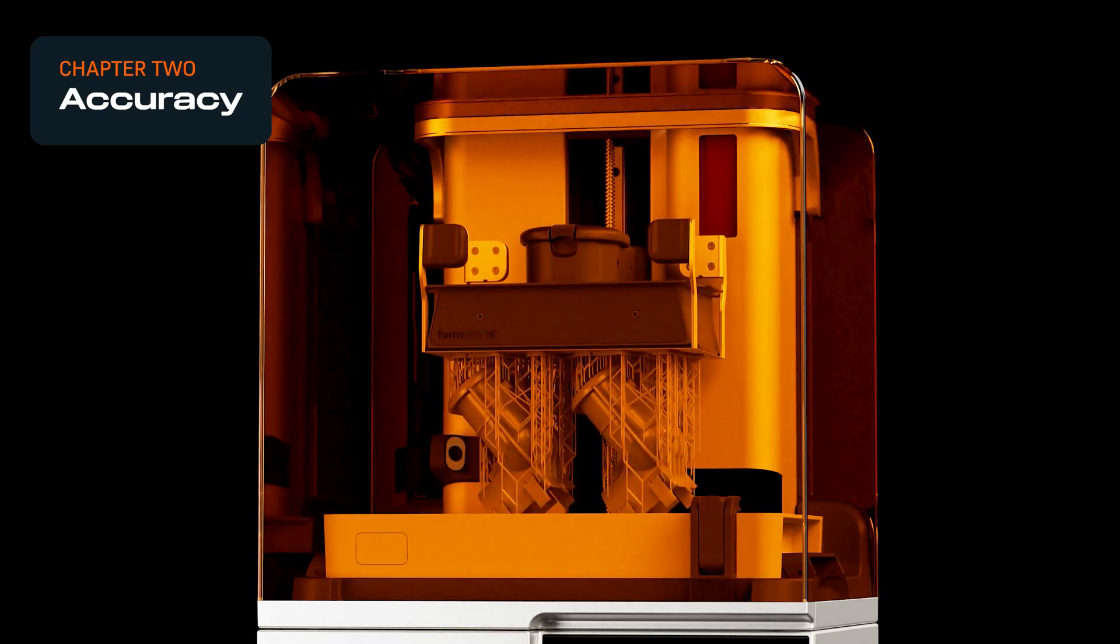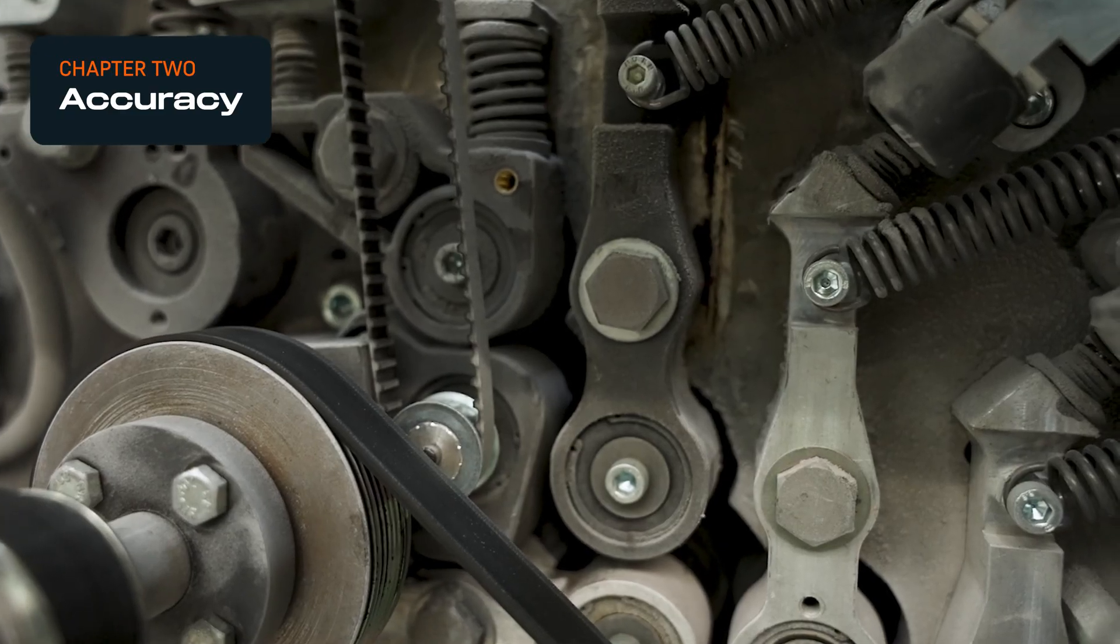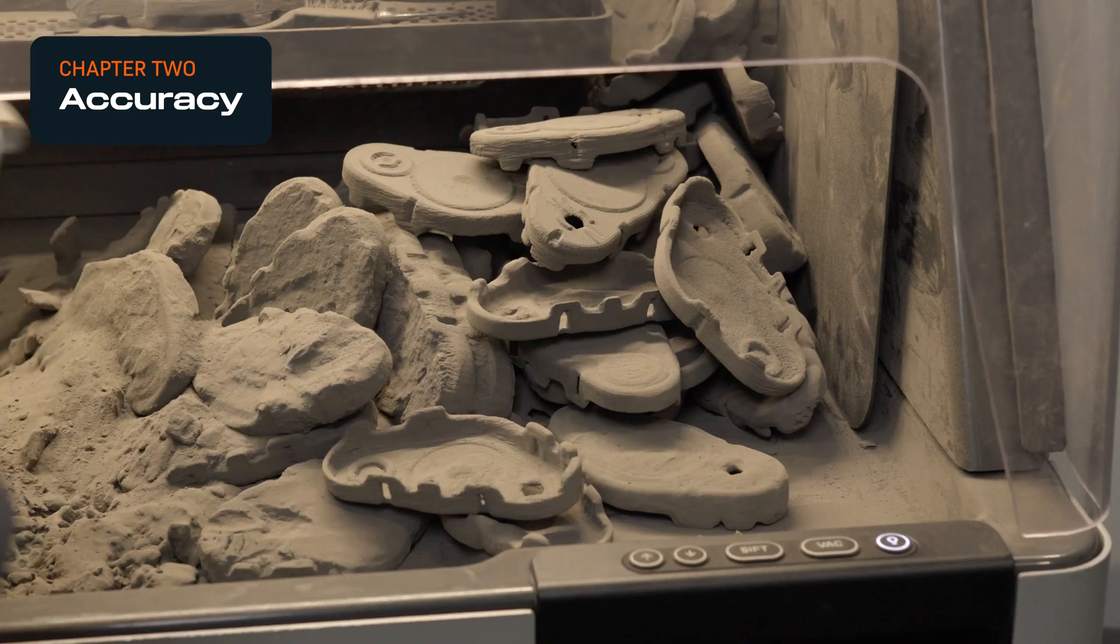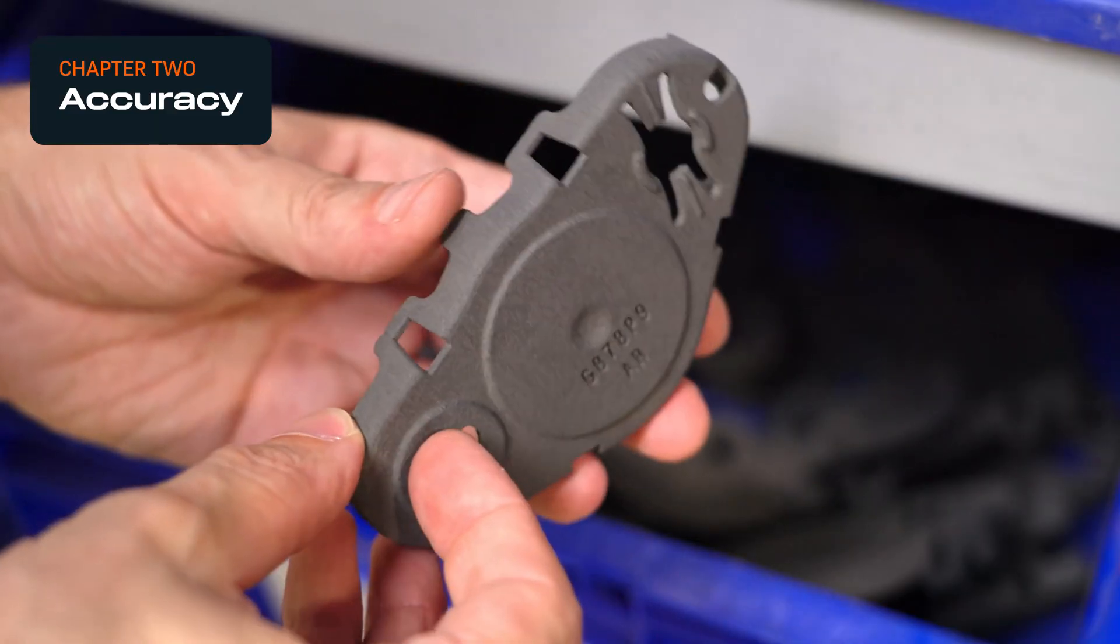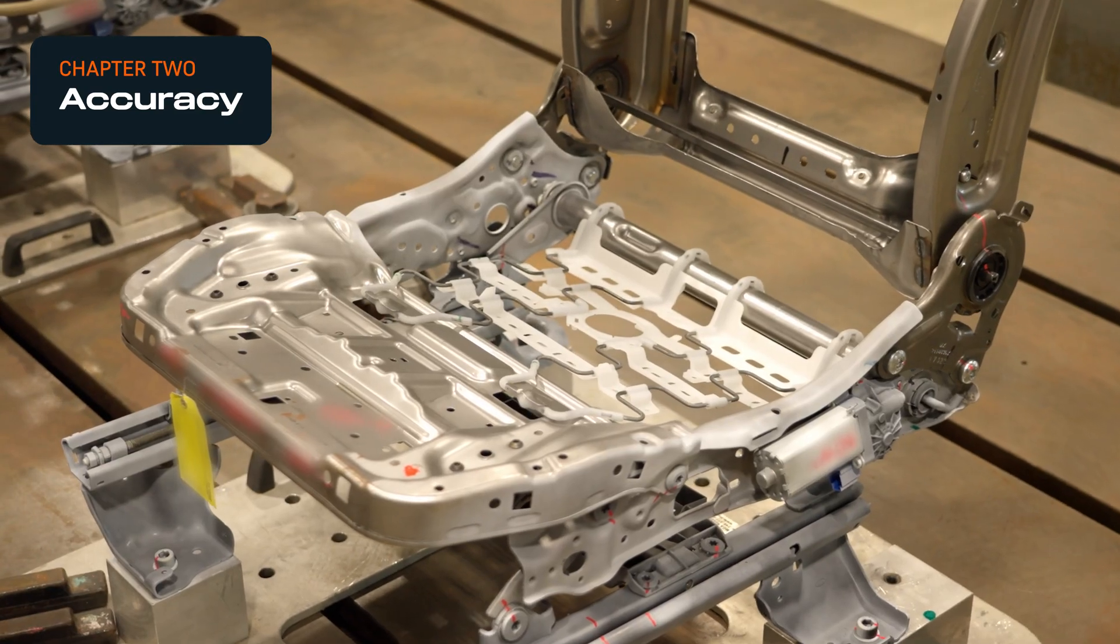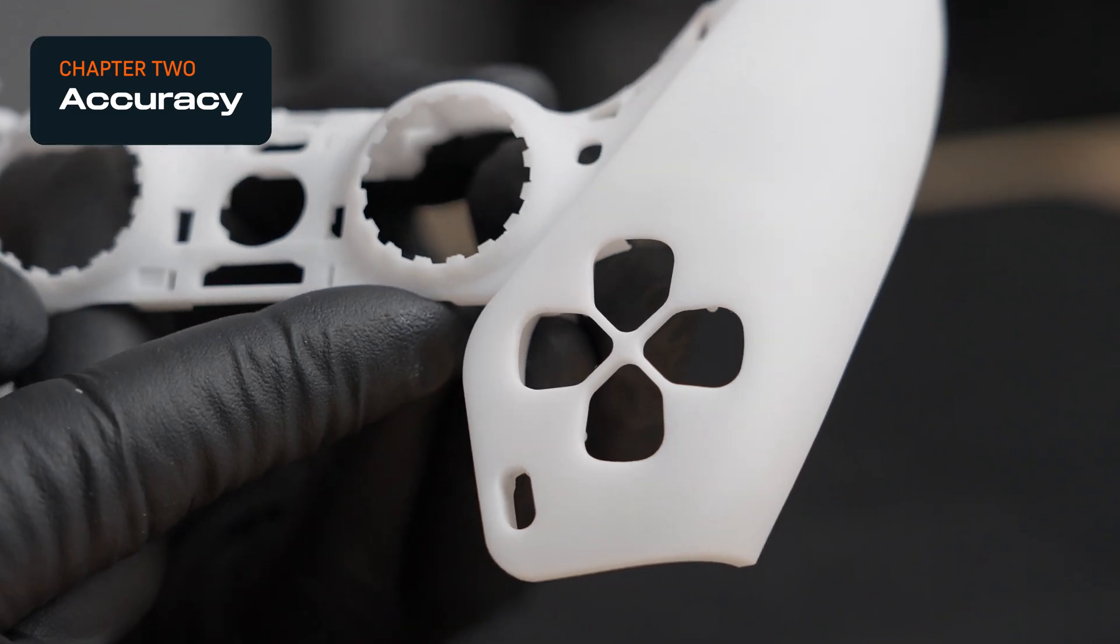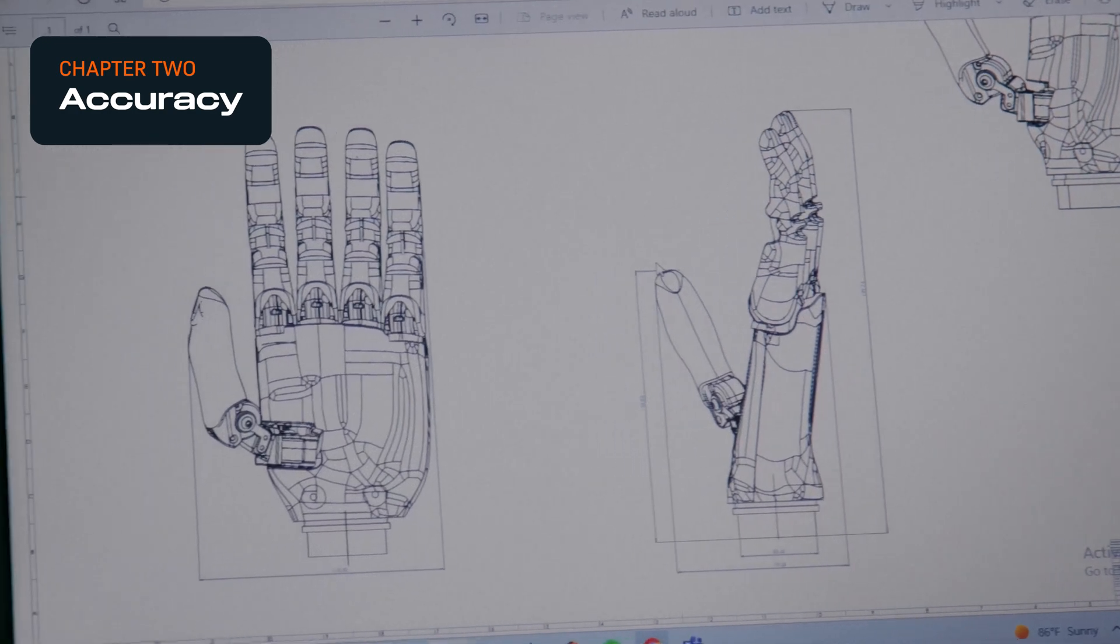Similarly, SLS 3D printers' accuracy is determined by the optical performance of that laser and how well controlled the build environment is. Since accuracy is closely tied to resolution, and SLA and SLS have higher resolution than FDM, these technologies tend to have higher accuracy.